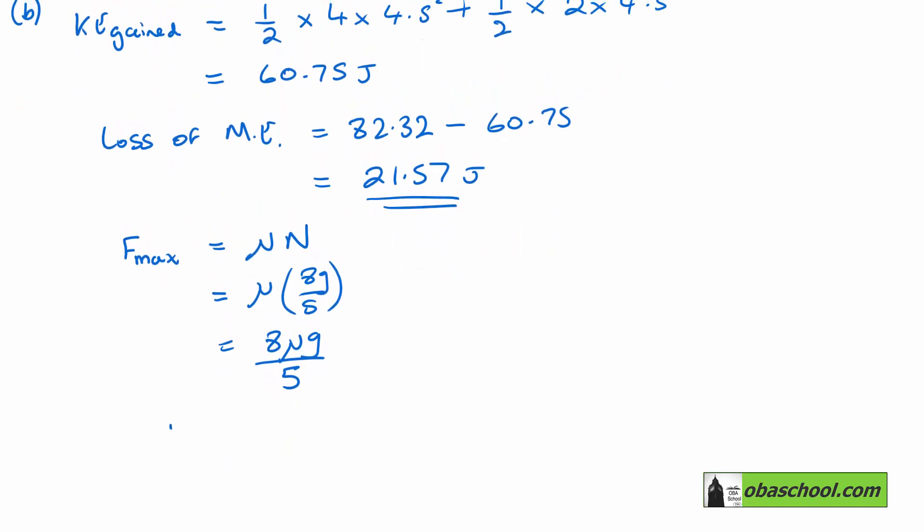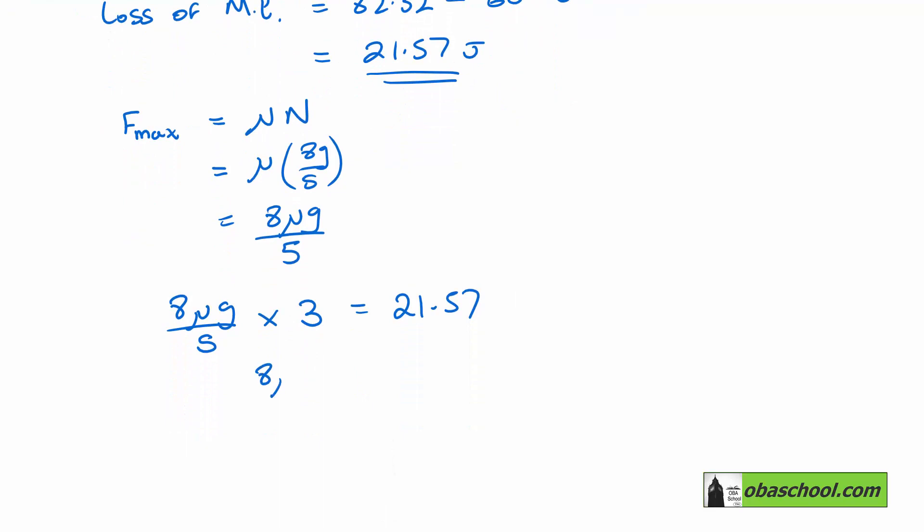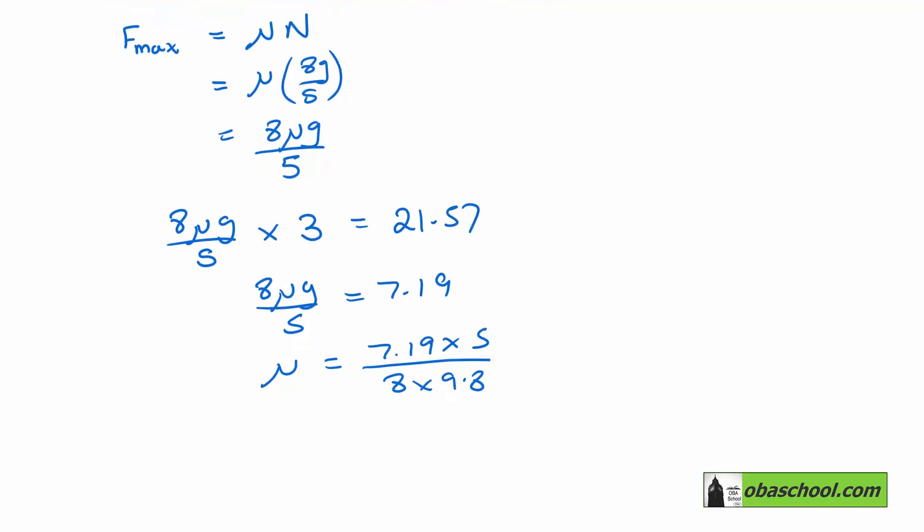So that force times the distance covered, which we know is 3 meters, has got to be equal to the 21.57. And so, 8 mu G over 5 is equal to 7.19. And then mu will be 7.19 times 5 over 8 times 9.8, and that gives us that mu is equal to 0.459.